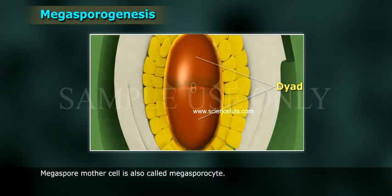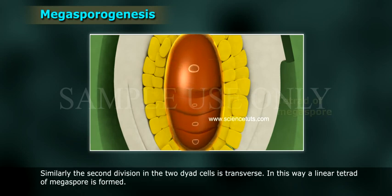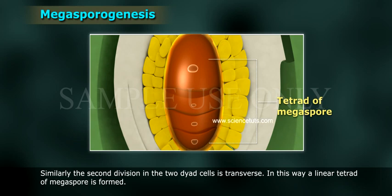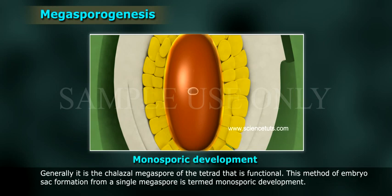Megasporogenesis. The megaspore mother cell, also called megasporocyte, undergoes meiosis to form four haploid megaspores. A wall is present after the first meiotic division, laid down transversely, forming a dyad. Similarly, the second division in the two dyad cells is transverse, forming a linear tetrad of megaspores. Only one of the four megaspores functions and forms the female gametophyte; the other three degenerate. Generally, it is the chalazal megaspore of the tetrad that is functional. This method of embryo sac formation from a single megaspore is termed monosporic development.